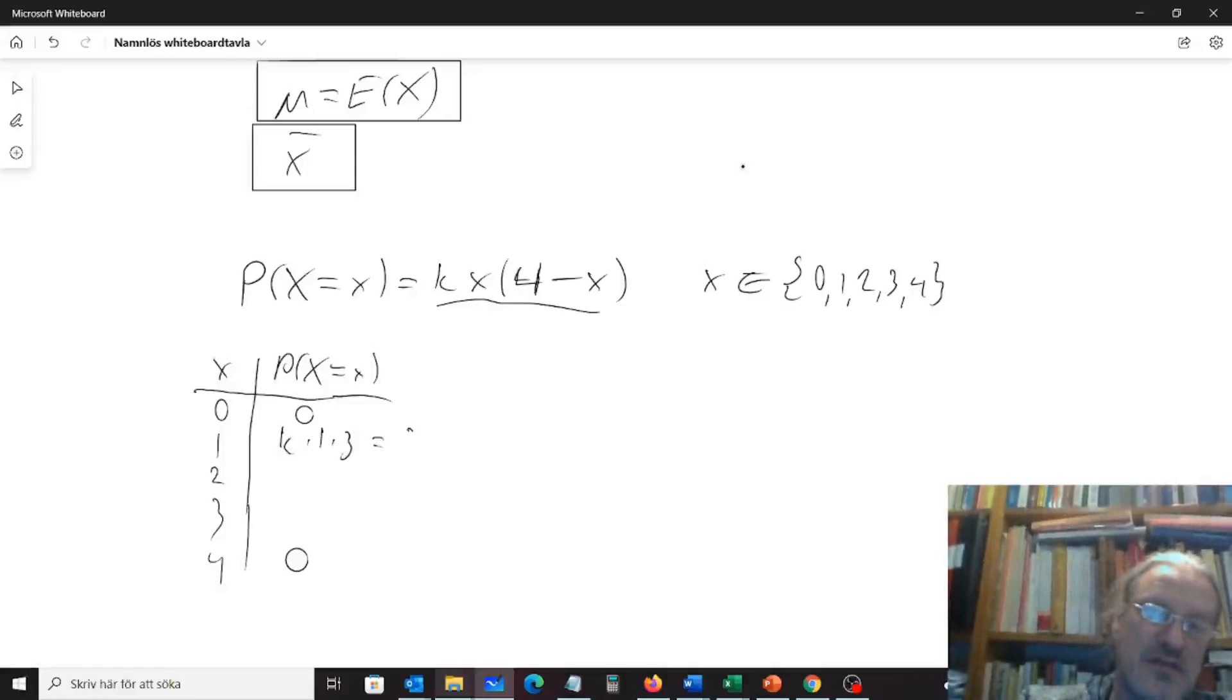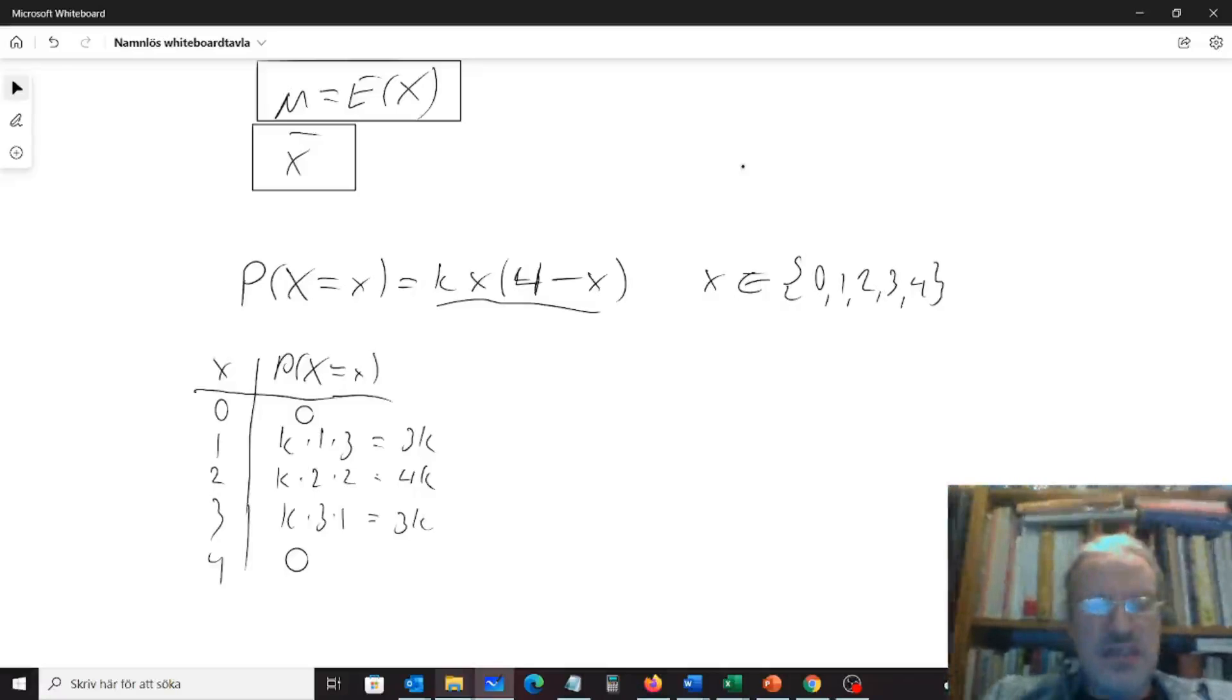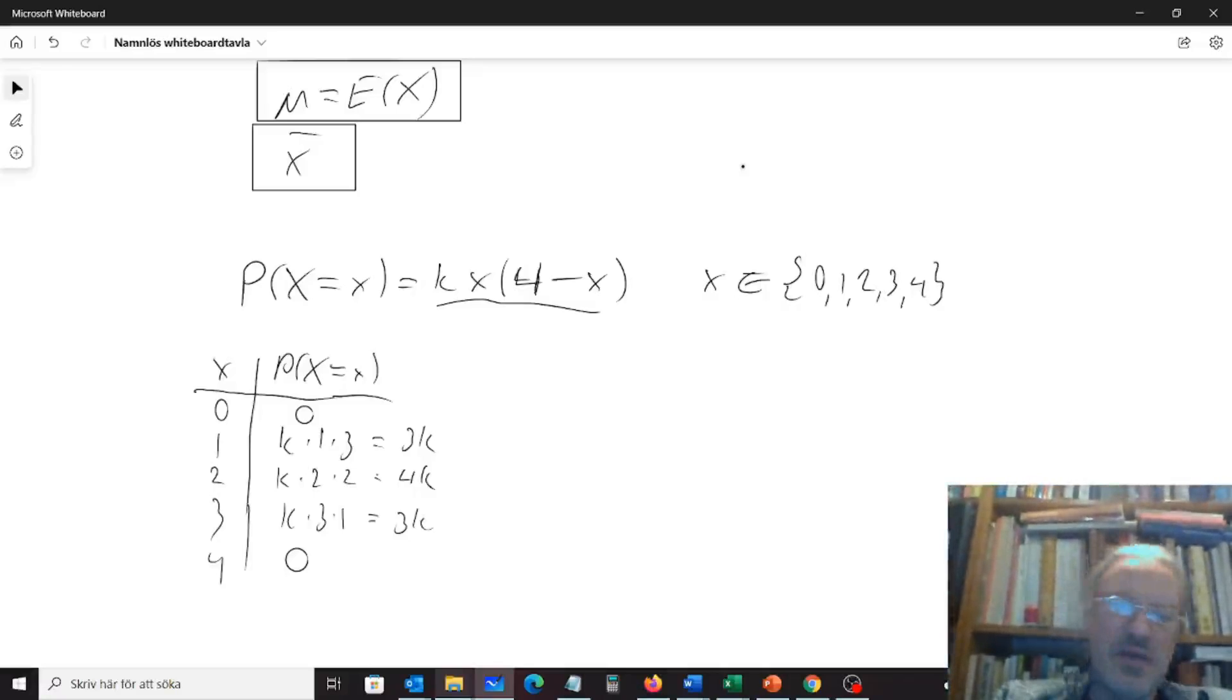1 will give us k times 1 times 4 minus 1, that is 3. So that will give us 3k. 2 will give us k times 2 times 4 minus 2, that is 2. So that will give us 4k. And the third one will give us k times 3 times 4 minus 3, which is 1. So now it's 3k again. And we know that these probabilities should add up to 1.